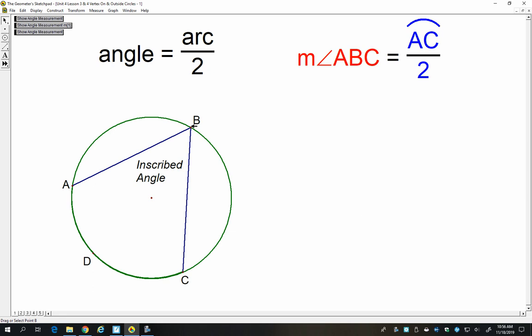And so the relationship that exists is that this angle, the measure of this angle, is equal to the measure of the arc it intercepts, so arc AC, divided by two. So that's what I have right here.